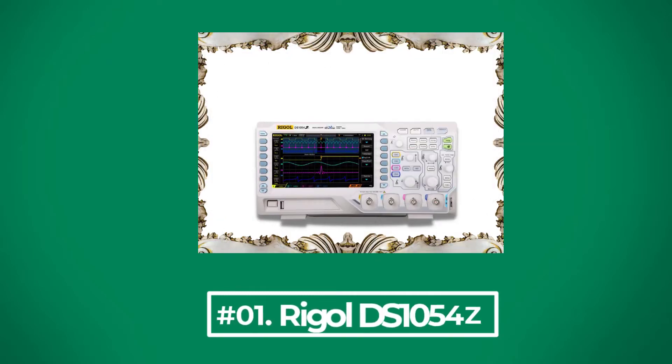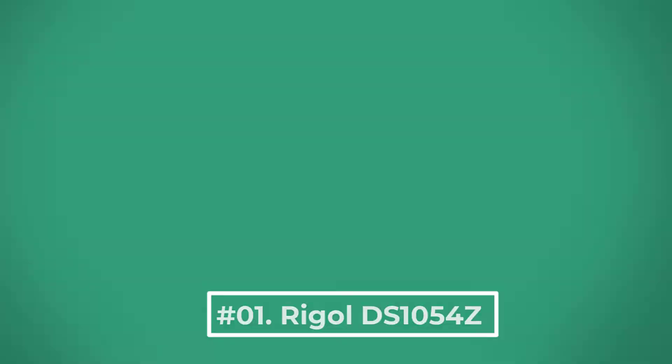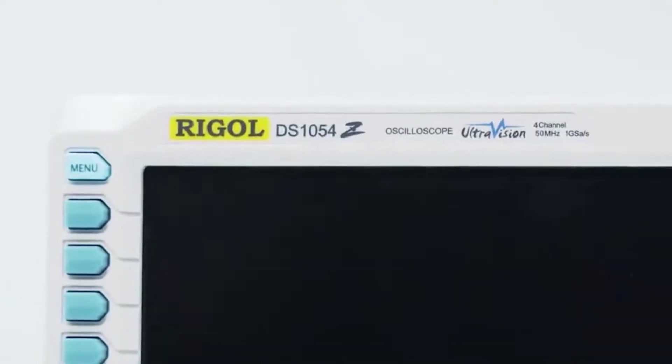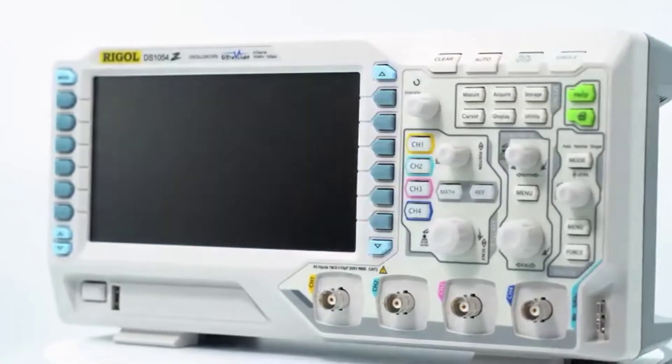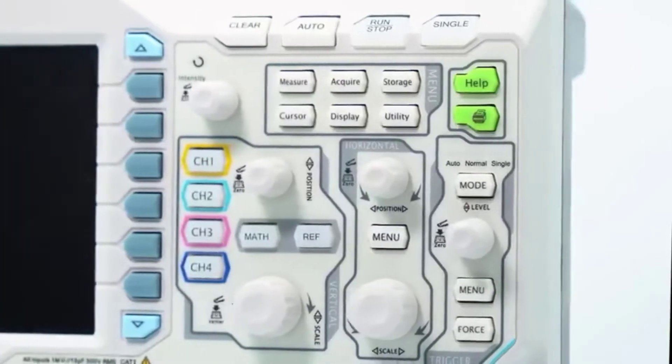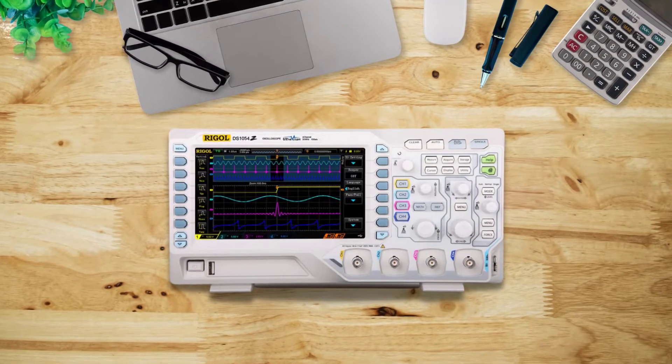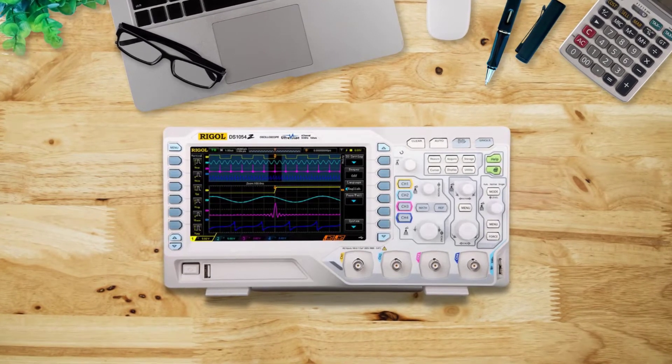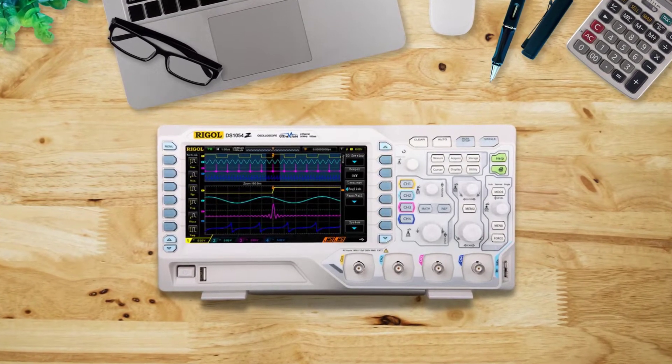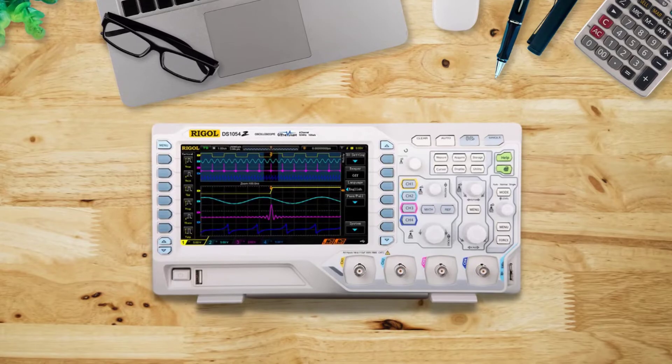At Number 1, Rigol DS-1054Z. The Rigol DS-1054Z is one of the best-selling oscilloscopes since its release. Although the price is higher than most, it's really worth it. It features four input channels and a bandwidth of 50 MHz, which is hackable to 100 MHz.